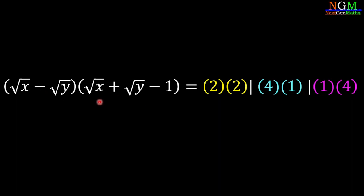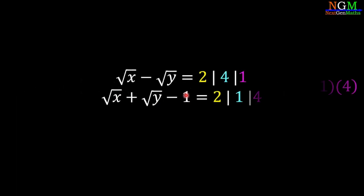Comparing the factors on both sides of the equation gives us sets of equations. For the first case using 2×2: root x minus root y equals 2, and root x plus root y minus 1 equals 2, because 2 times 2 equals 4.